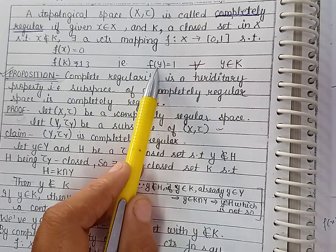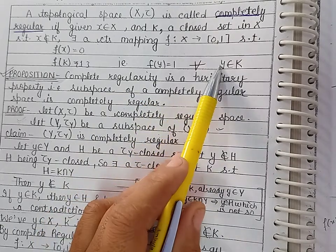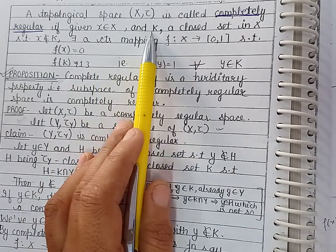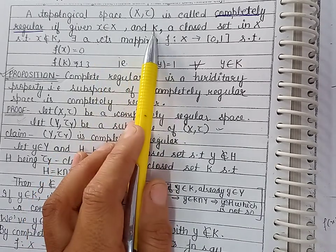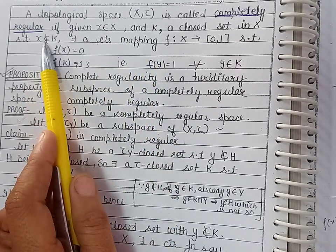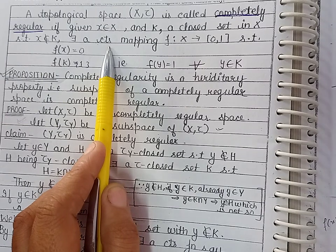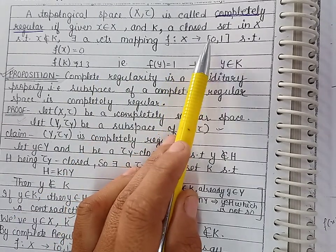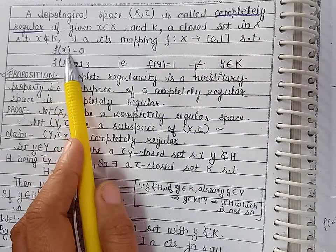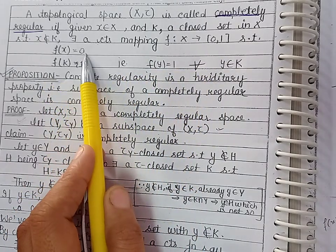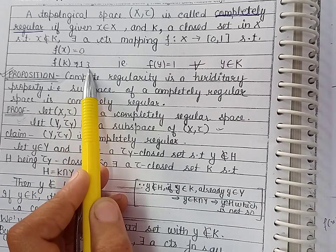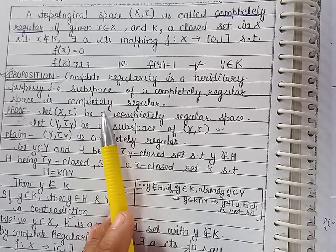It means F(y) = 1 for every y belonging to K. So for a given point and a closed set not containing that point, there should exist a continuous mapping from X into [0,1] such that the image of the element is 0 and the image of the closed set is singleton {1}. Then we say that the space is completely regular.